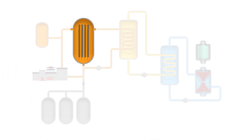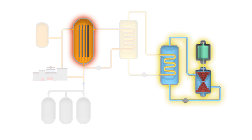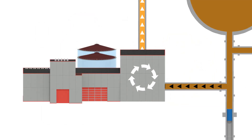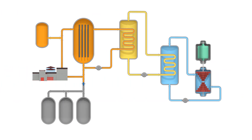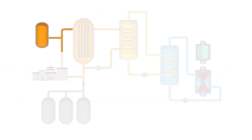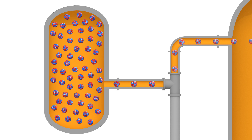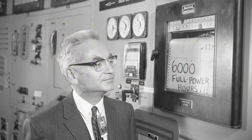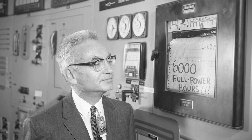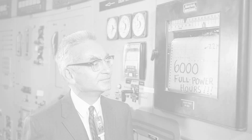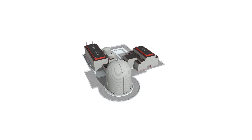Because these reactors can operate at higher temperatures, their steam cycle generates electricity more efficiently. The use of liquid fuel allows for real-time waste processing. Finally, there is no need to shut down the reactor for refueling — new fuel can be introduced to the system during operation.